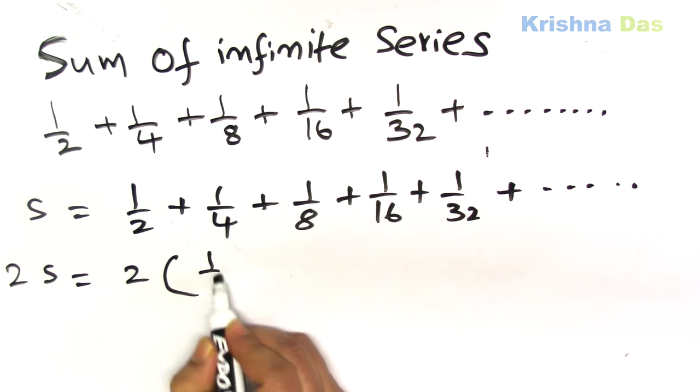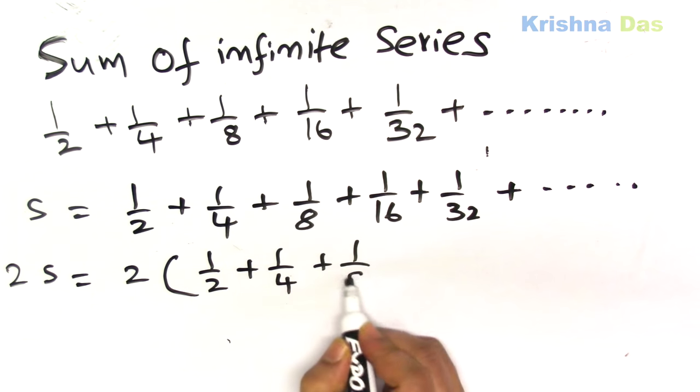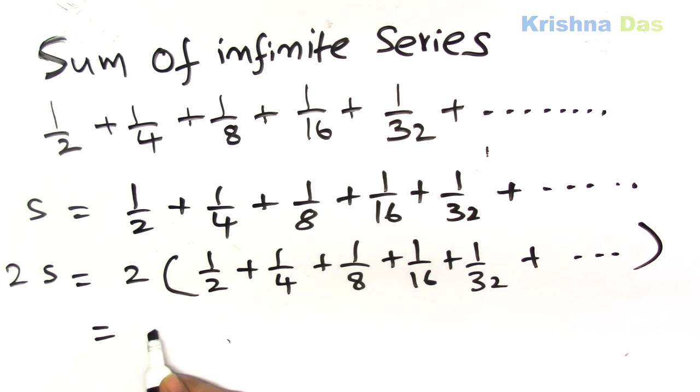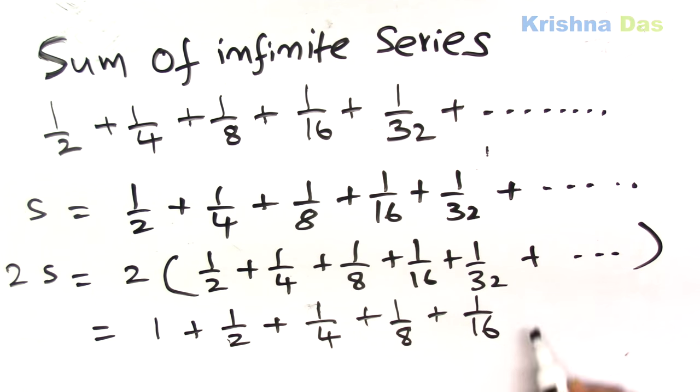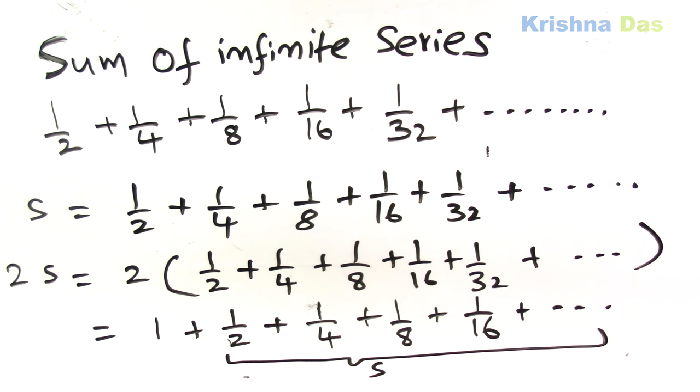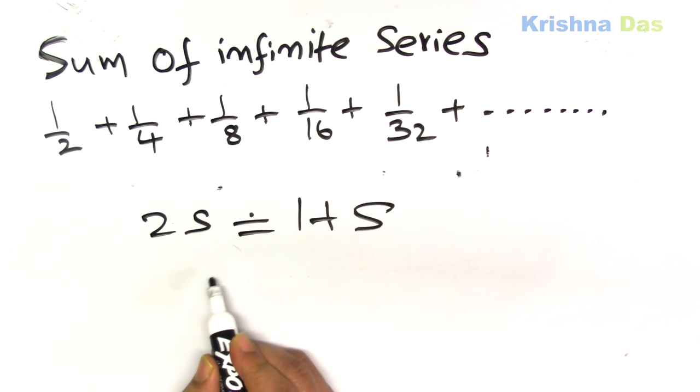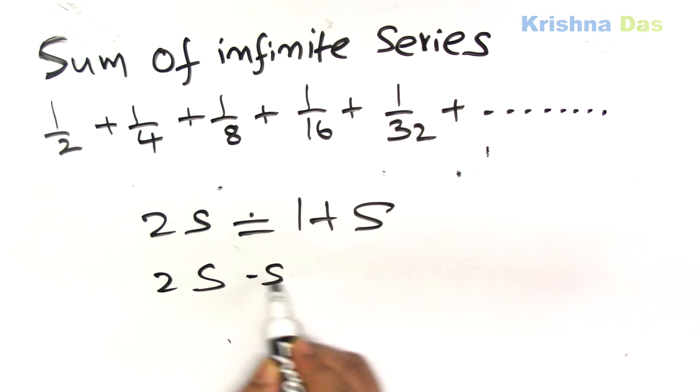Multiply both sides by 2, so you'll get an equation like this: 2S is equal to 2 multiplied by the series. So if you multiply by 2, the series becomes 1 plus 1/2 plus 1/4 plus 1/8 and so on. So this is S, as we assumed previously. Therefore the equation becomes 2S is equal to 1 plus S. 2S minus S is 1, therefore S is 1 and the sum is 1.